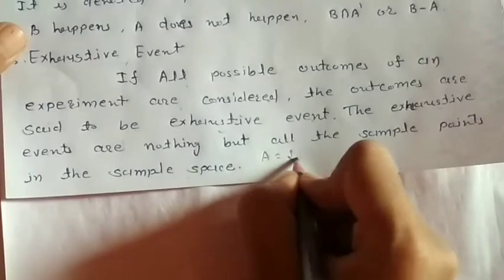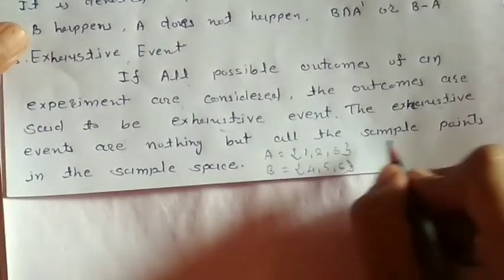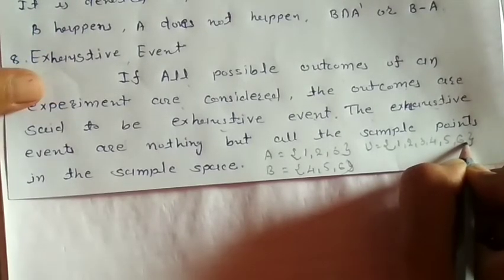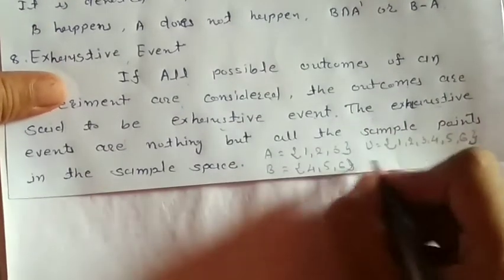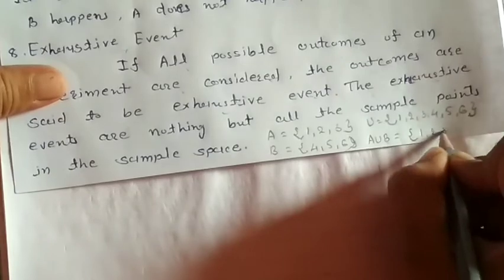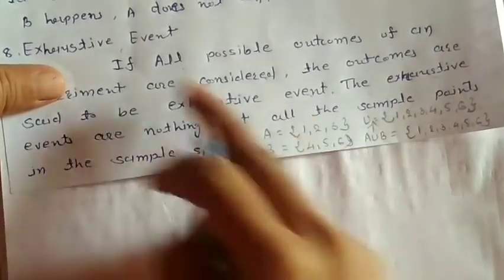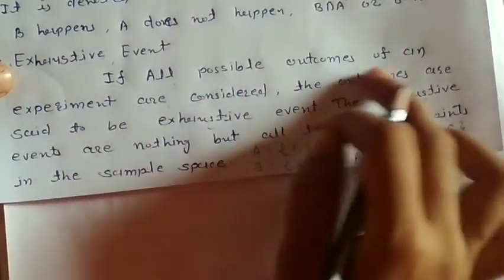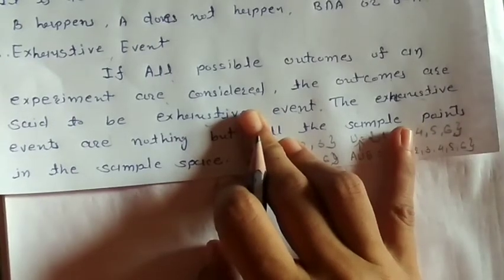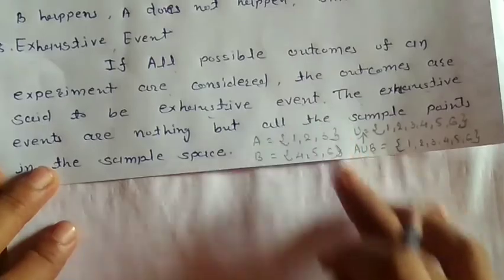Suppose A = {1, 2, 3} and B = {4, 5, 6}, and U (the sample space) = {1, 2, 3, 4, 5, 6}. Then the exhaustive event means A union B. If we find A union B, we get {1, 2, 3, 4, 5, 6}, which equals the sample space U. So this union is an exhaustive event.